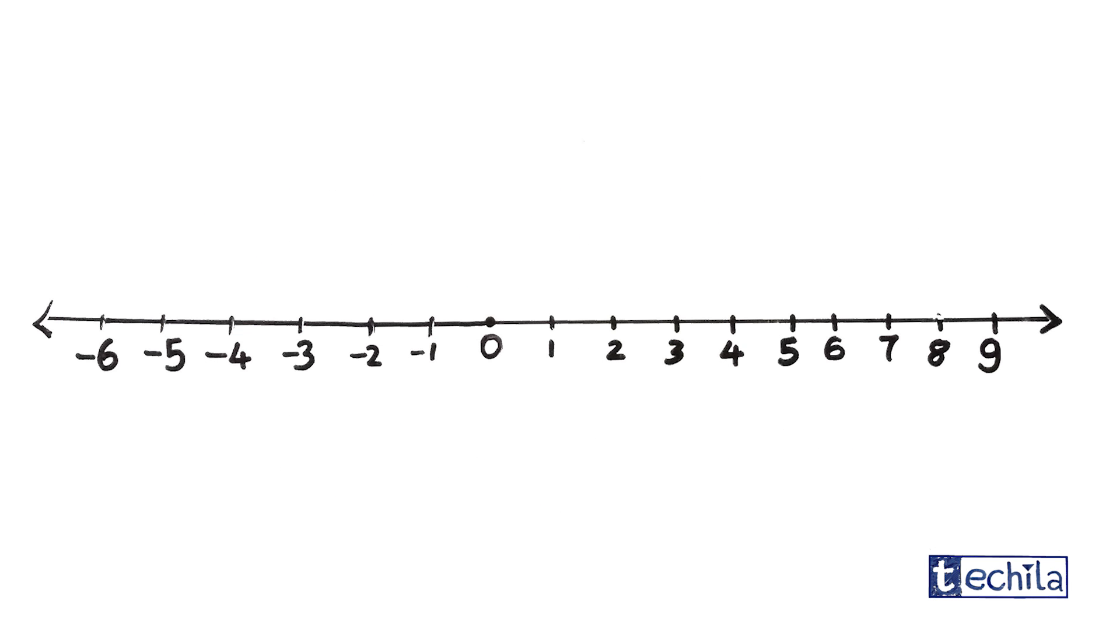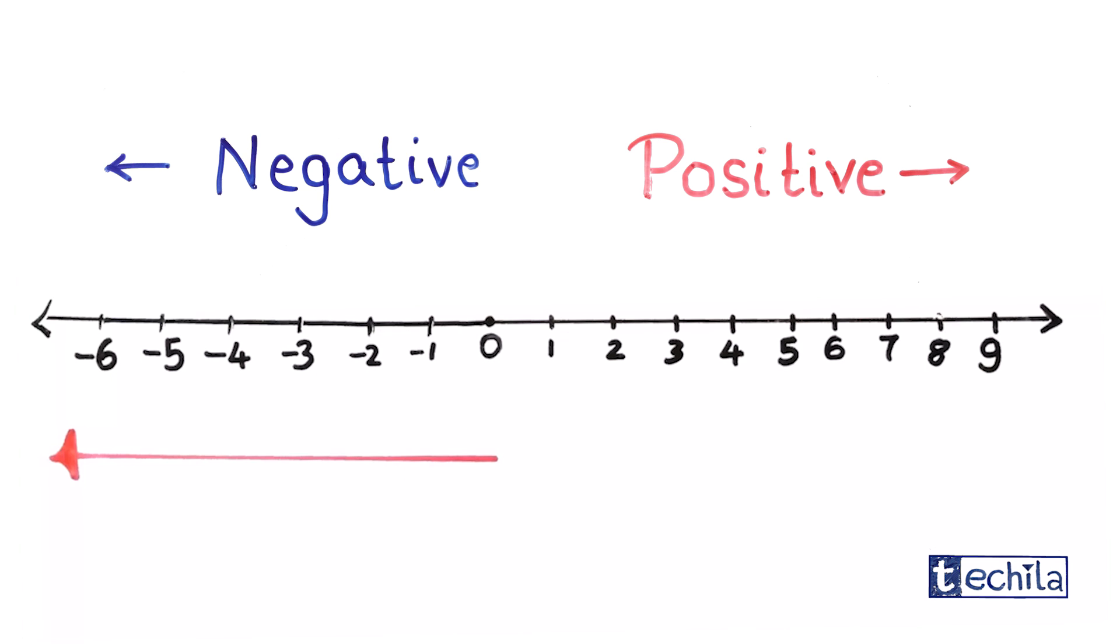Also, it is important to note that negative numbers were placed in the opposite direction as that of the positive numbers because they give a negative effect on the number line.